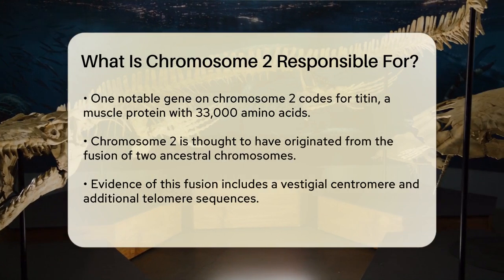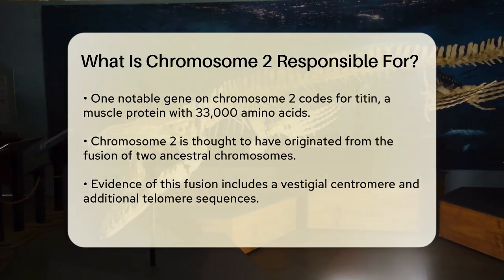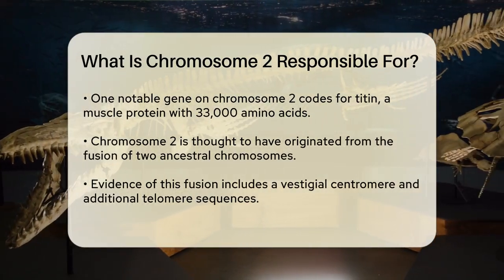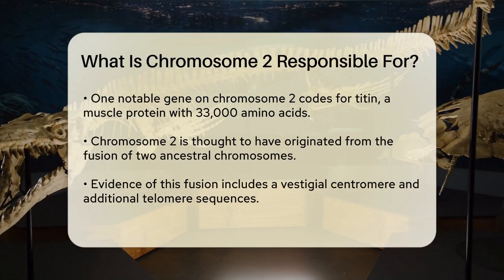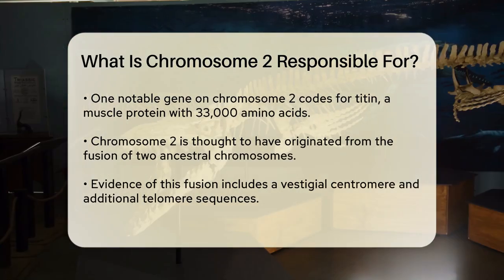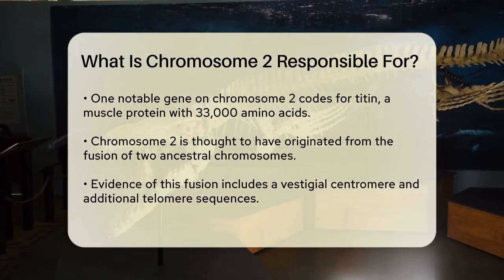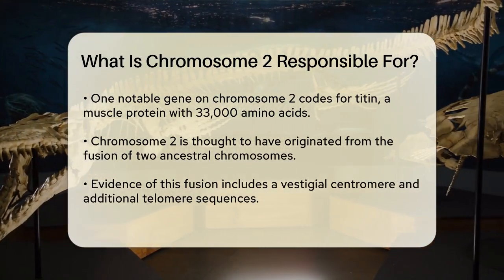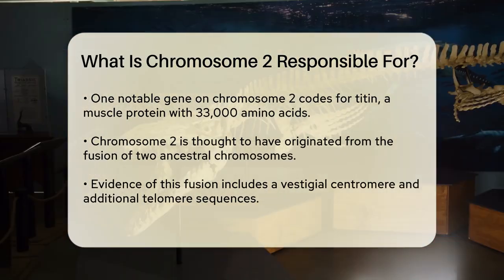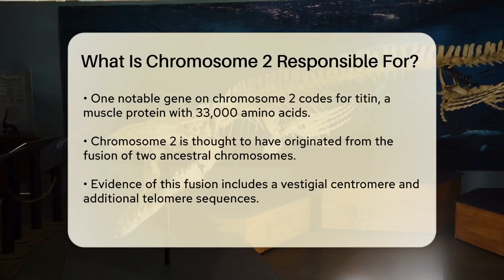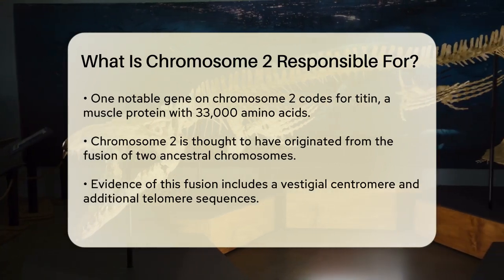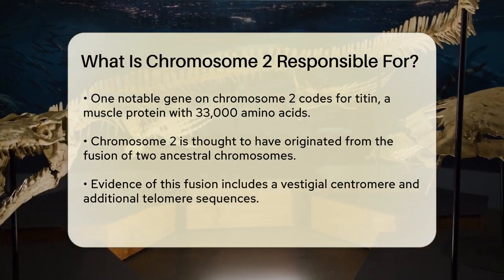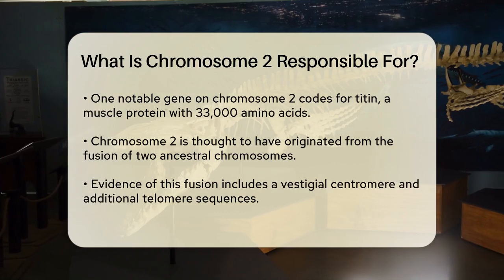Chromosome 2 is also unique because it is believed to be the result of an end-to-end fusion of two ancestral chromosomes. This is evident from the presence of a vestigial centromere and additional telomere sequences, which are normally found only at the ends of chromosomes.